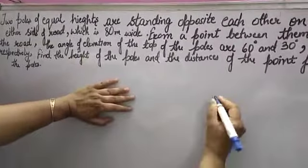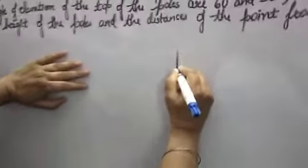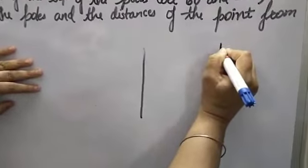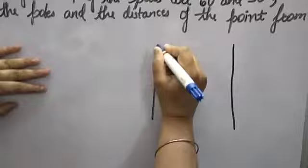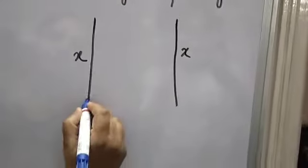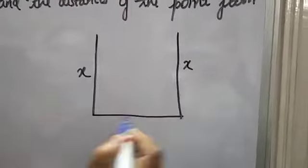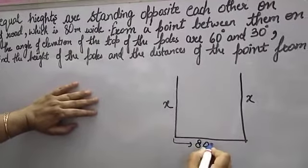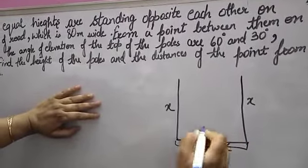Two poles of equal heights are standing opposite to each other. Suppose there are two poles like this. Their height is the same. Suppose their height is X. So they are standing on the ground like this, and which is 80 meter wide. So this road is 80 meter wide where they are standing.